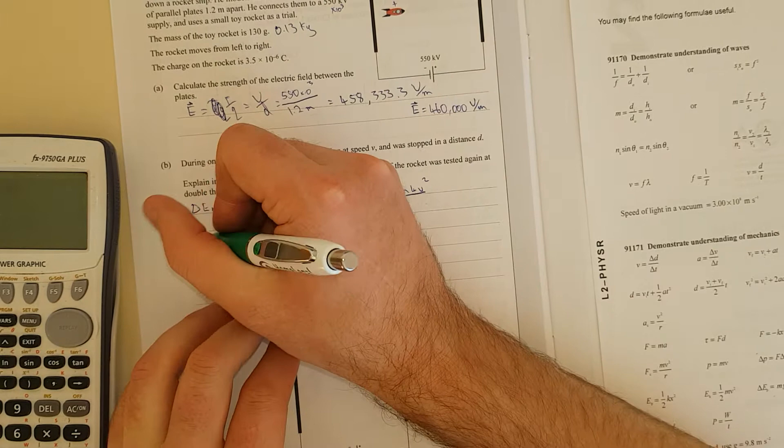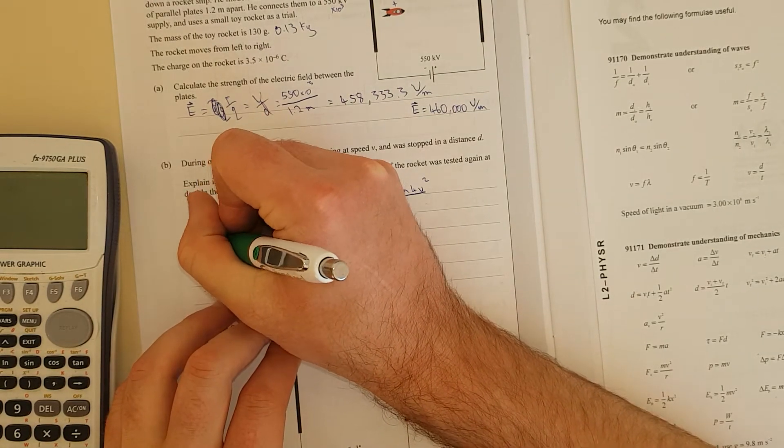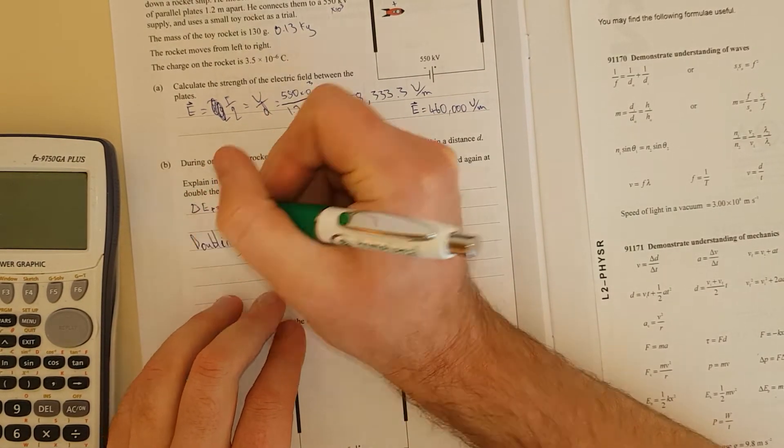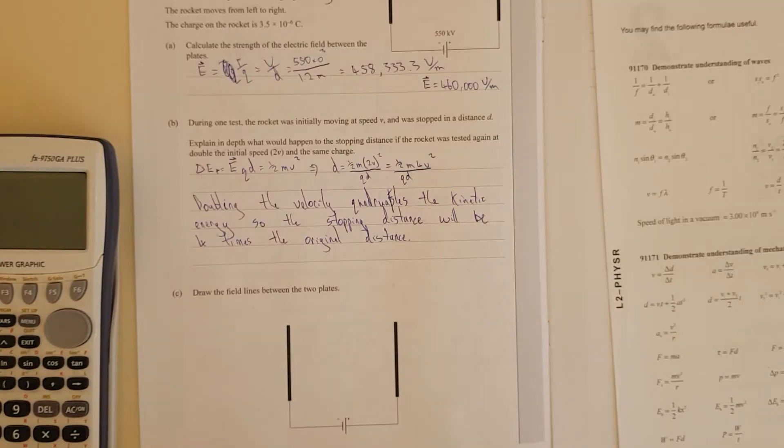So we can just say doubling the velocity quadruples the kinetic energy. So stopping distance will be four times the original distance.